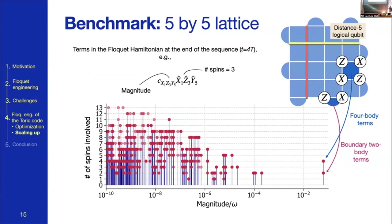As a benchmark on a larger system, the geometry we chose includes extra two-body boundary terms. With this type of boundary condition, one obtains a degenerate pair of ground states that can be used to make a topological qubit. We compute the Floquet Hamiltonian — also Floquet-engineering these boundary terms — and plot all components arranged by how many spins they involve and their strength. We get the desired four-body terms and two-body boundary terms, and then find a clear gap in magnitude where error terms appear, exactly as predicted at the single-plaquette level, followed by a forest of higher-order processes that are very strongly suppressed.